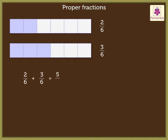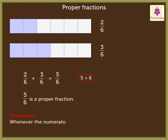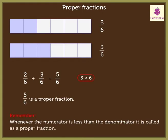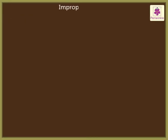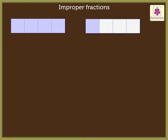We get the answer as five upon six. In this fraction, the numerator is smaller than the denominator. So five upon six is a proper fraction. Remember, whenever the numerator is less than the denominator, it is called a proper fraction. Now let's understand improper fractions.